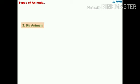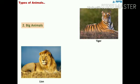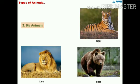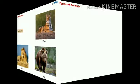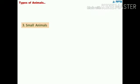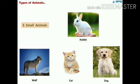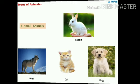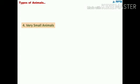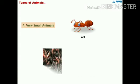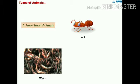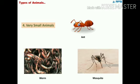The next category is big animals. They are smaller than the previous one. Examples are tiger, lion, and bear. The third category is small animals — rabbit, wolf, cat, and dog are examples. The last category is very small animals; ant, worms, and mosquitoes are a few examples.